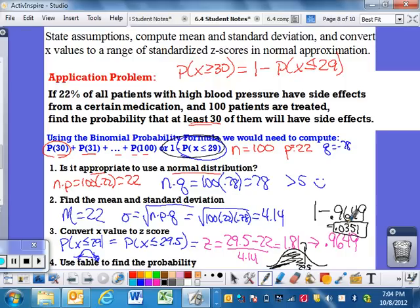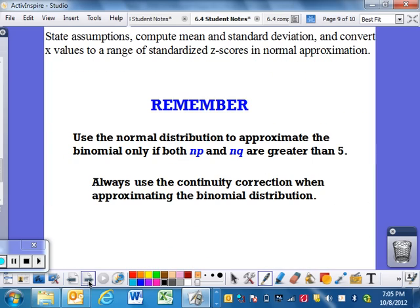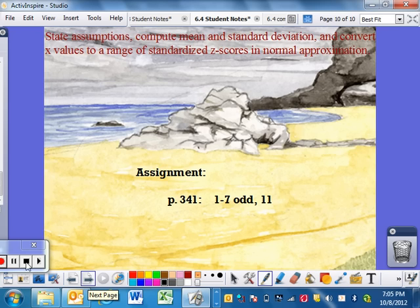You will end up getting for your answer 0.0351, just over 3%. Only about 3% chance that at least 30 of them will have side effects, because the probability of it happening is relatively small. That's your ability to use a binomial problem and use the normal curve to solve it in a relatively quick and simple way. We will do a couple more of those in class. Just to remember, before you start, calculate N times P and N times Q. And then always, always, always use the continuity correction, the plus or minus 0.5 idea when approximating a binomial distribution. Here's your homework. You guys have a wonderful day.